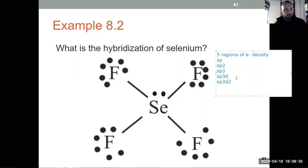So the only one that has those numbers adding to five regions of electron density is S1, P3, D1. So that's the correct answer. Sp3d is the hybridization of selenium. As long as you can count the regions of electron density and add on your fingers those superscripts, you can always quickly and easily determine the hybridization.